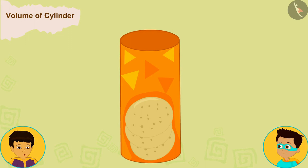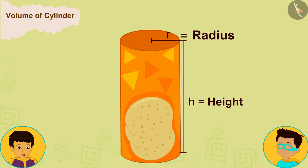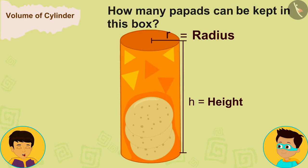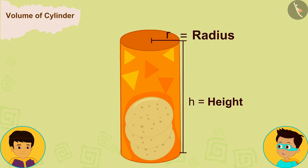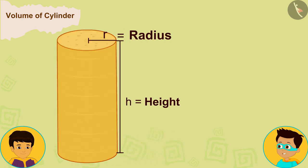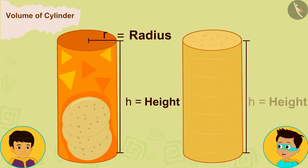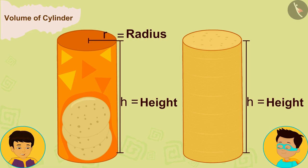Look Thomas, suppose the height of this cylindrical box is h and the radius of its base and top surfaces is r. The radius is the same as the radius of each papad. Now, if we measure the height of the papad, which is very little actually, assuming that this height is equal to one unit, then we can say that the height of the box is equal to the total number of papads that can fit in the box.